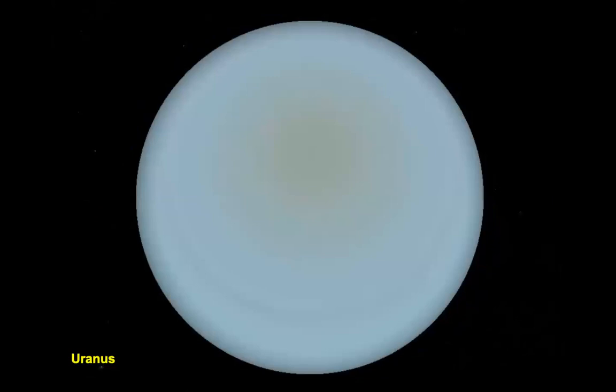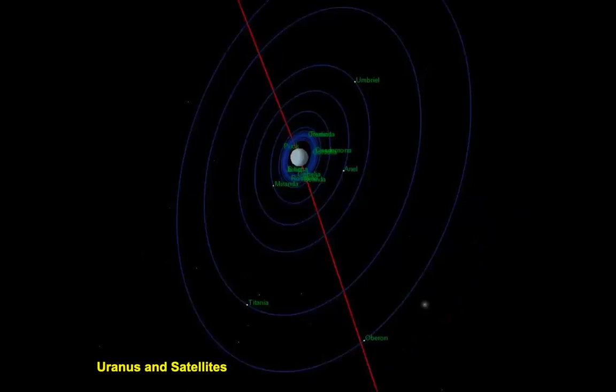Uranus — the seventh planet from the sun, the smelly planet. It has a lot of methane gas, and methane smells bad. You cannot live there — it's gas and it's toxic, it's deadly.